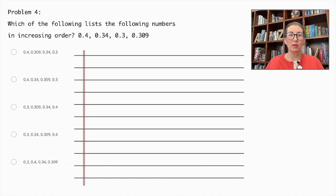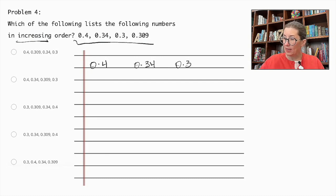Problem number four. Which of the following lists the following numbers in increasing order? Here is our set of numbers and we're asked to put them in increasing order, which means from lowest to highest. So let's put the numbers down. 0.4, 0.34, 0.3, and 0.309.